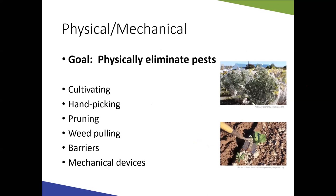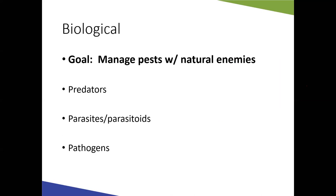Physical or mechanical management involves physically eliminating pests. For hornworms, which overwinter in the soil, you can cultivate the soil to disturb and kill pupae. Handpicking caterpillars and pruning out diseased plant material are also effective. Pulling weeds matters too, as weeds can harbor diseases or pests that can move into tomatoes. Mulch acts as a barrier that not only retains soil moisture but can slow the spread of soil-borne diseases that splash up onto leaves during rain.